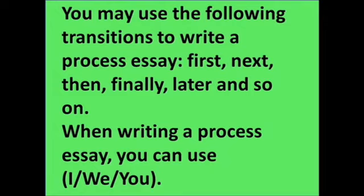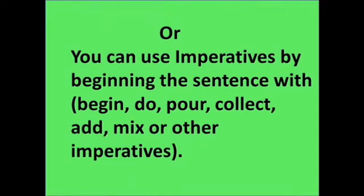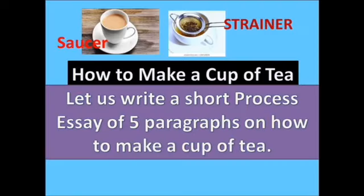When writing a process essay, you can use 'I', 'we', or 'you', or you can use imperatives by beginning the sentence with words like begin, do, pour, collect, add, mix, or other imperatives. Let us write a short process essay of five paragraphs on how to make a cup of tea.